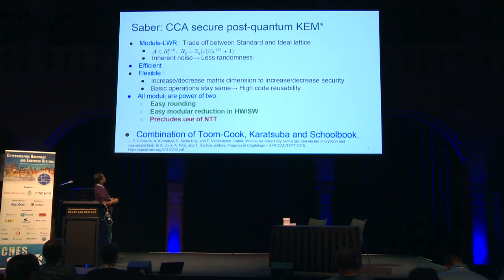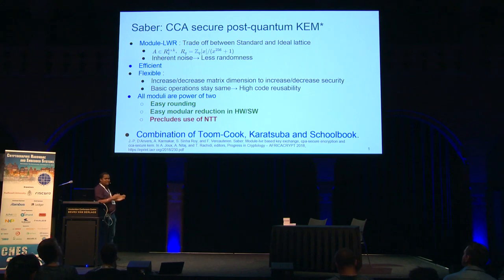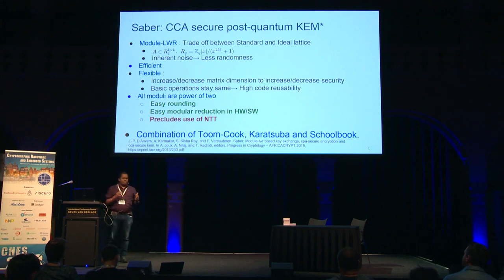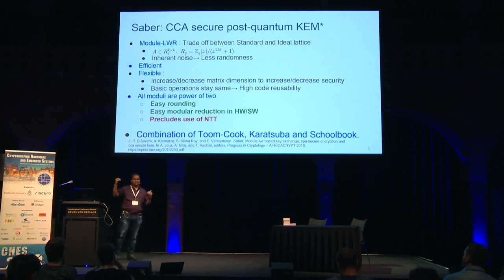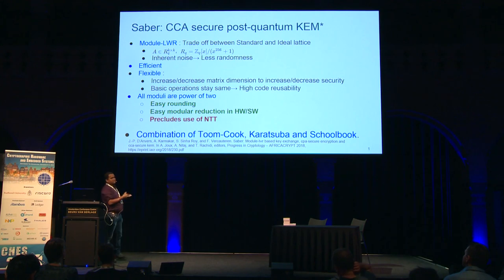A little bit about Saber. Saber is a CCA-secure post-quantum KEM; its hardness is based on the Module LWR. Modules are the trade-off between security and efficiency between the standard and the ideal lattices. LWR stands for Learning With Rounding. It's very close to the well-known Learning With Errors problem. The only difference is that in LWE you add external noise like Gaussian or binomial noise, but in Learning With Rounding we get inherent noise just by rounding the sample down to a lower modulus, so we use less randomness.